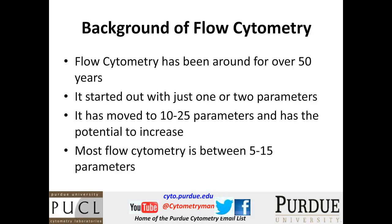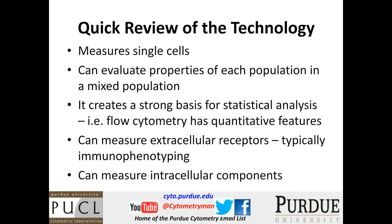Flow cytometry has been around for a long time — over 50 years — and it started out with just one or two parameters. That's important for today's discussion because it has now moved to a large number of parameters, from 10 to 25 parameters might be a possibility, and I think that will increase over the years. Most flow cytometry is going to be around the 5 to 15 parameters, and that's the general area I'm going to talk about today.